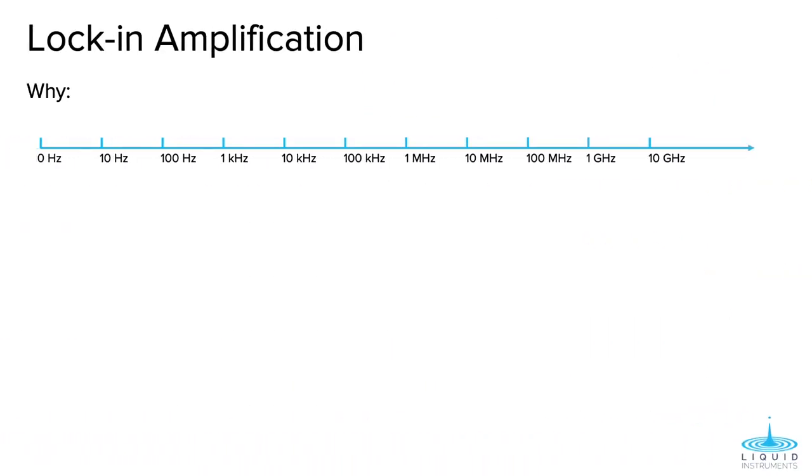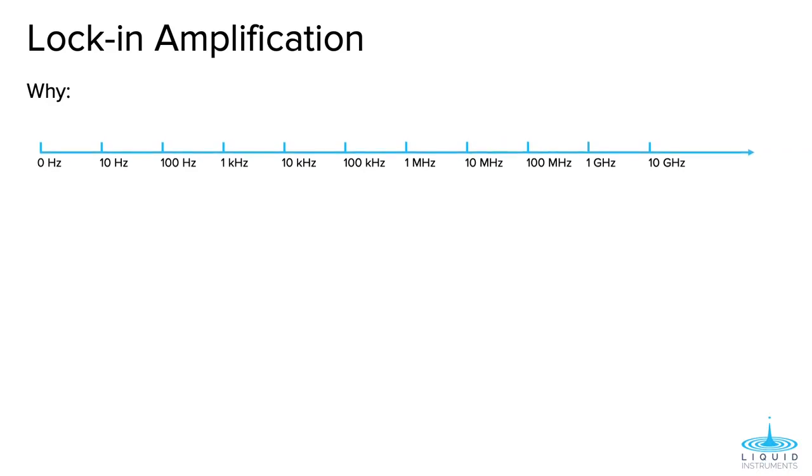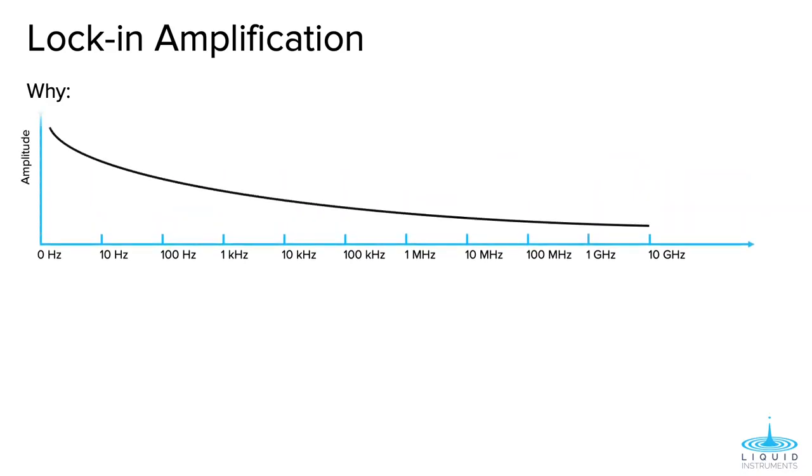So, why do we want to do this lock-in amplification? One of the most important reasons is the existence of a certain type of noise, 1 over F noise, shown in the black curve. The amplitude of the 1 over F noise is inversely proportional to the frequency. The low frequency region has a much higher noise floor compared to the high frequency range.